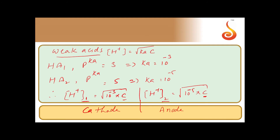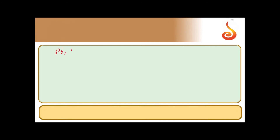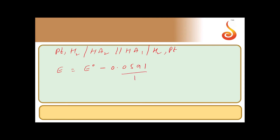Only with this arrangement will we get a positive EMF for the cell. The cell is set up as: Pt | H₂ | HA2 || HA1 | H₂ | Pt. Now applying the Nernst equation: E = E°cell − (0.0591 / 1) × log([H⁺]anode / [H⁺]cathode).